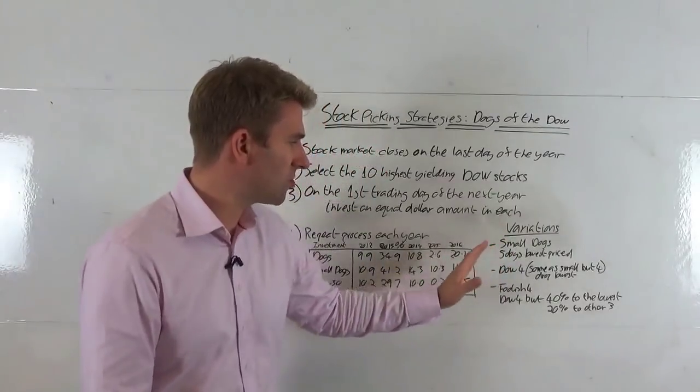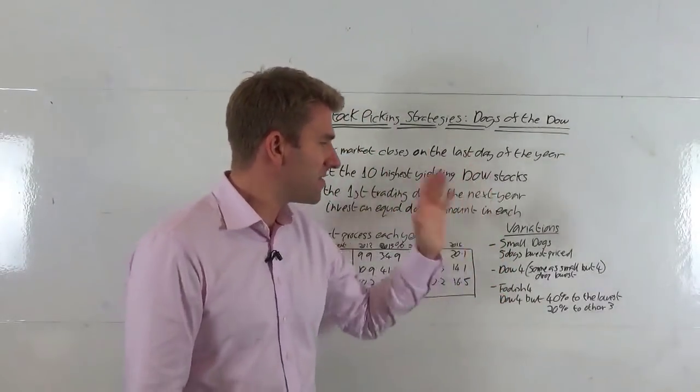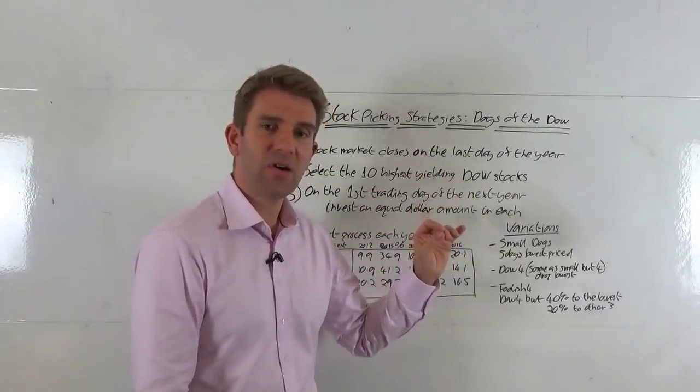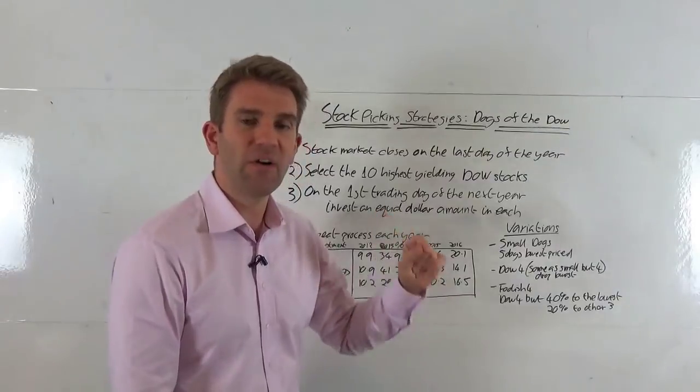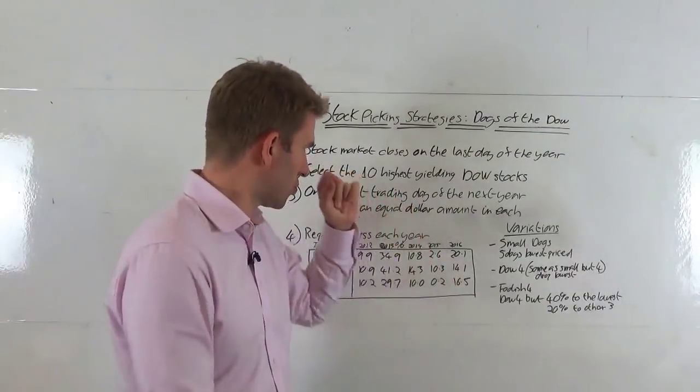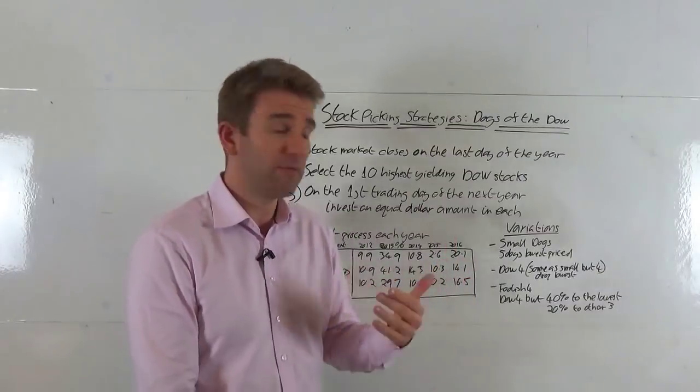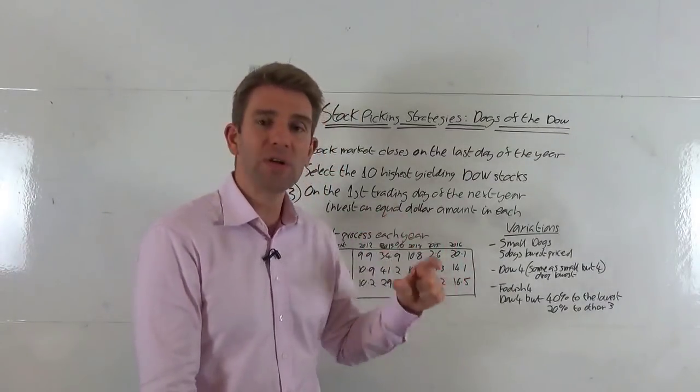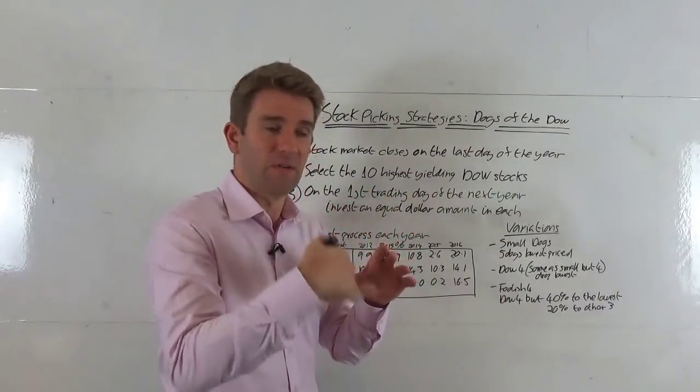Some of the variations are what's called the small dogs. So we do exactly the same thing, but this time we pick out the lowest priced. So we pick the five lowest priced stocks that are in the dogs. So we get the dogs, the 10 highest yielding dividend stocks, and then we pick the lowest price and we have five of those. We do the same thing, we split the investment up into fifths.